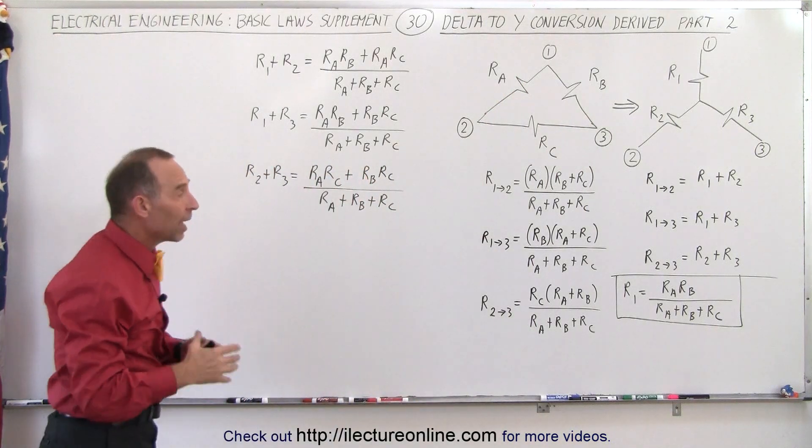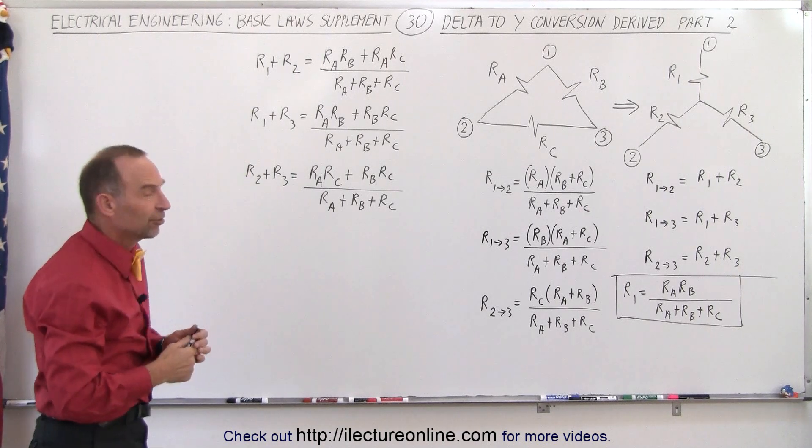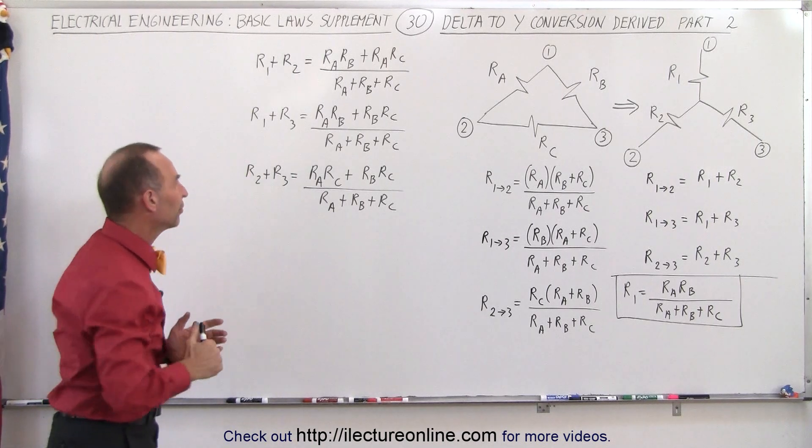So let's now find out how we figure out R2 in terms of Ra, Rb, Rc. So we have to group them together differently.